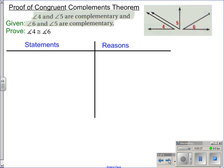You are given angle 4 and 5 are complementary, and angle 6 and angle 5 are complementary. So, statement 1 is always the given information. Angles 4 and 5 are complementary. Angle 5 and angle 6 are complementary. Why is this true? We were given it.